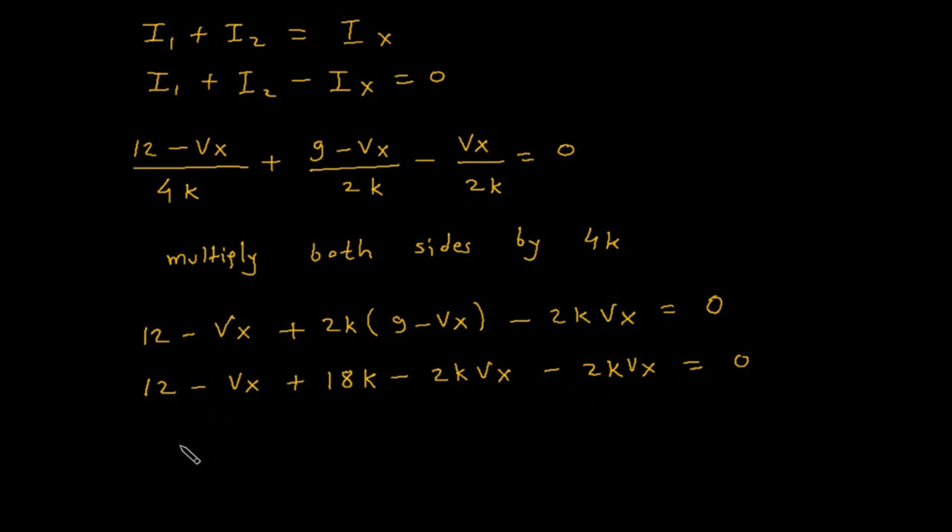Now this will be 12 - Vx plus 18k - 2k*Vx - 2k*Vx is equal to 0. So this will be 12 + 18k, which is 18012, minus 4k*Vx is equal to 0.